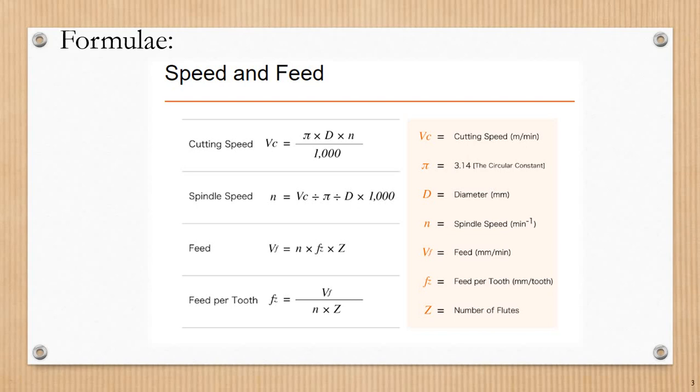For spindle speed, N equals Vc divided by pi, divided by D, into 1000. Feed rate Vf equals N into fz into Z. Feed per tooth fz equals Vf divided by N into Z.